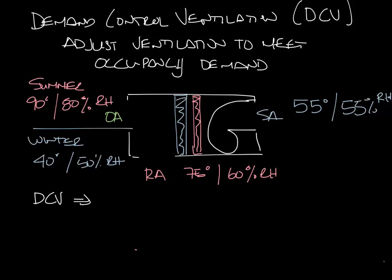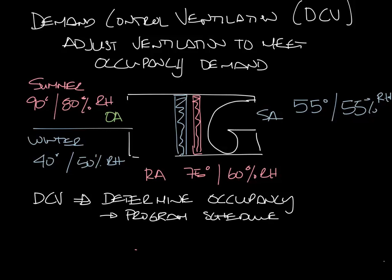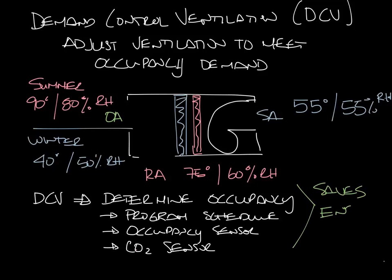So using demand control ventilation, you can determine occupancy in the space and control the ventilation air based on that. And there's a couple ways to determine the occupancy. You could just program in the lunchtime cafeteria schedule and bring in ventilation air just during those times. You could have an occupancy sensor to sense when there are occupants in the cafeteria, or you could use a CO2 sensor to sense that there are occupants in the cafeteria as well. This way you only supply ventilation air when necessary, which saves energy and saves money.